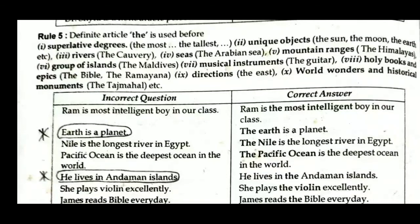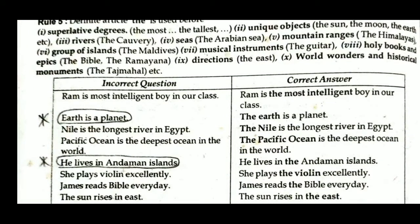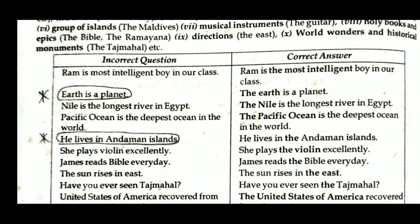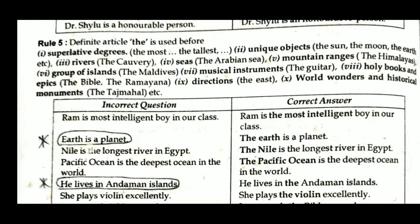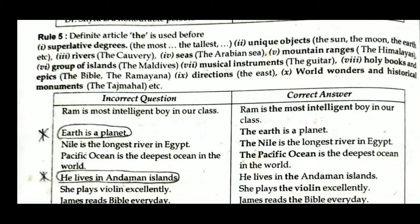Use 'The' before rivers (the Kaveri, the Yamuna), before seas (the Arabian Sea, the Bay of Bengal), before mountain ranges (the Himalayas), before groups of islands (the Maldives), before musical instruments (the guitar), before holy books and epics (the Bible, the Ramayana), before directions (the east), and before world wonders and historical monuments (the Taj Mahal).